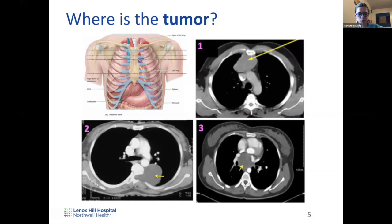For scan number three, which mediastinum is the tumor in? We can see the heart here, so we're at the level of the inferior mediastinum. The tumor appears to come off the heart, so the answer is middle mediastinum. Some might argue it's partly posterior mediastinum as well — both middle and posterior could be considered correct answers here.